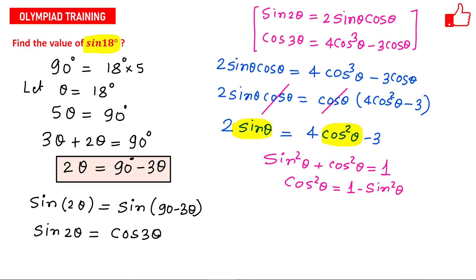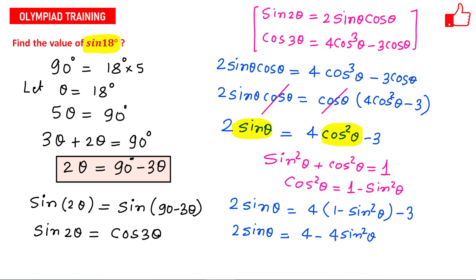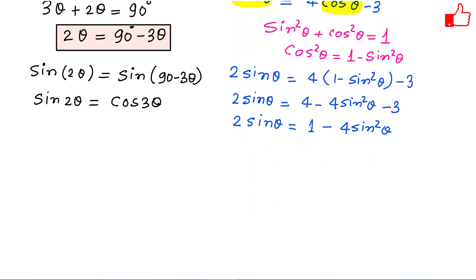Plugging in cos²θ = 1 − sin²θ, we get 2 sin θ = 4(1 − sin²θ) − 3, which becomes 2 sin θ = 4 − 4sin²θ − 3, that is 2 sin θ = 1 − 4sin²θ. Taking everything to the left-hand side: 4sin²θ + 2 sin θ − 1 = 0.